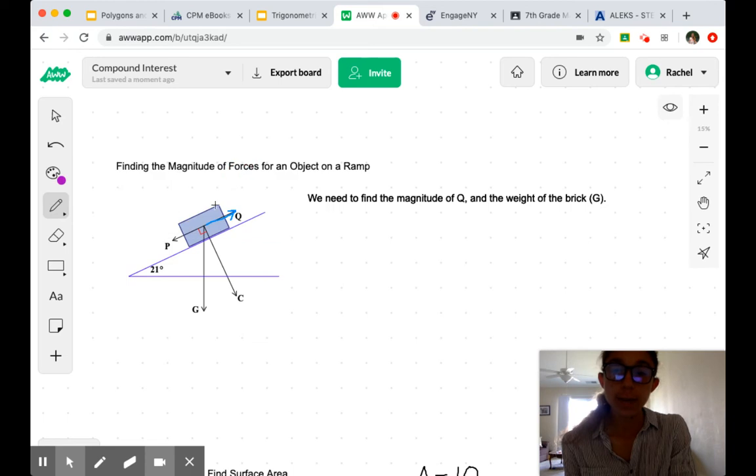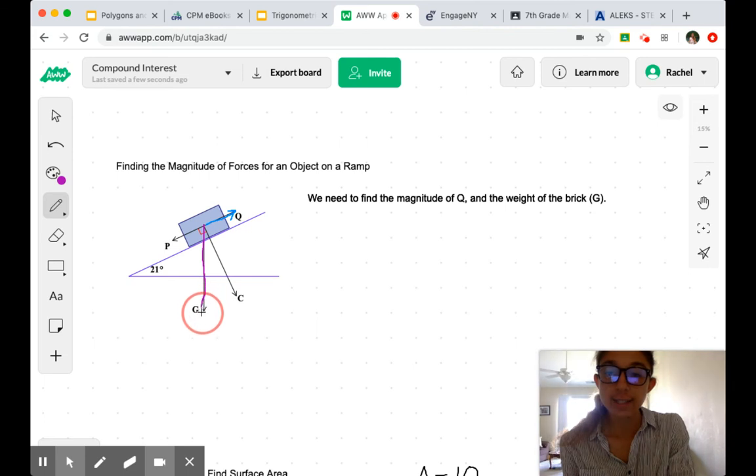And then the weight of the brick. The weight of the brick is going to be denoted by G because G acts as gravity pulling that brick down. All right, let's get started on that.